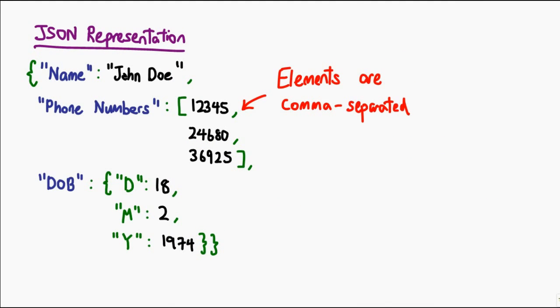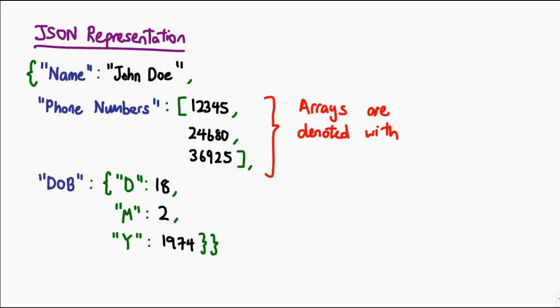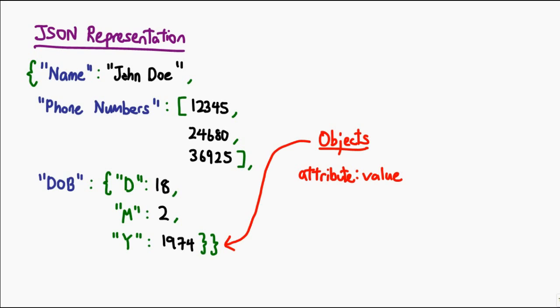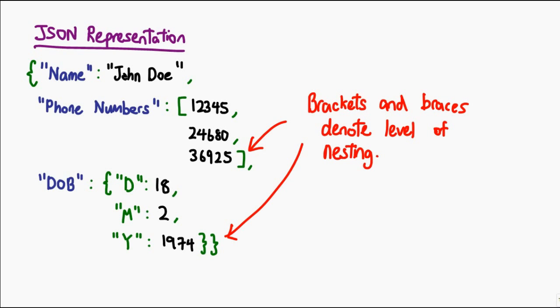In JSON, all elements are comma separated. Arrays are denoted with square brackets, whereas objects, which contain attribute value pairs, are denoted by curly braces. We can tell the depth of an embedded object by counting how many unclosed brackets or braces exist before it. Basically all you're doing is you're using your curly braces to actually denote the level of nesting of your various items.